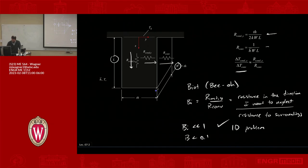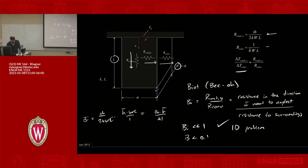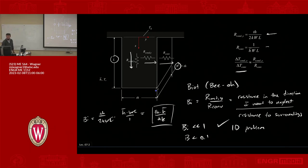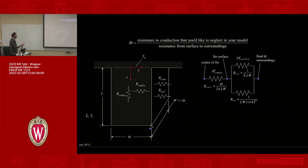Writing this out more completely for this particular problem: the Biot number equals (thickness/2·k·W·L) times (h̄·W·L / 1), so W·L cancels and you're left with Bi = (thickness · h̄) / (2k). That's the Biot number for conduction through a plane wall using a half-symmetry model.